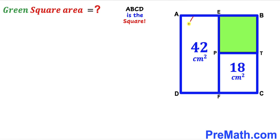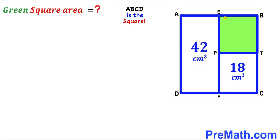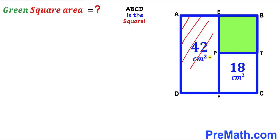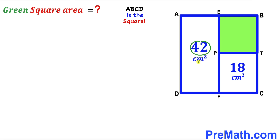Welcome to PreMath. In this video we have got square ABCD. This square consists of a green shaded square EBTP, a blue rectangle PTCF, and a blue rectangle AEFD. The area of rectangle PTCF has been given as 18 centimeters square, and the area of rectangle AEFD is 42 centimeters square. ABCD is a square, and our task is to calculate the area of the green shaded square EBTP.